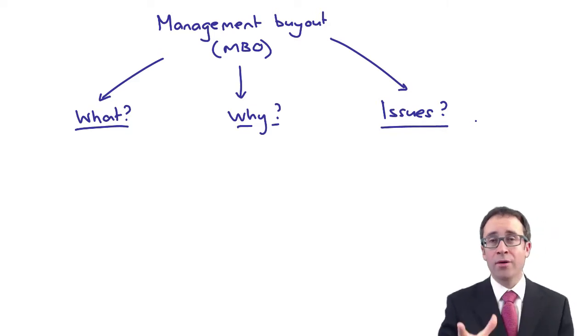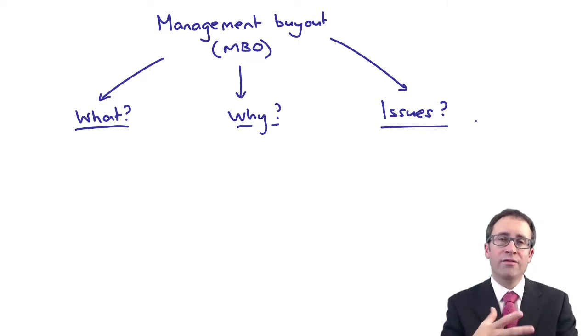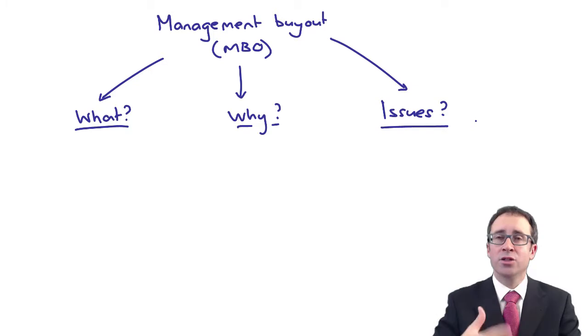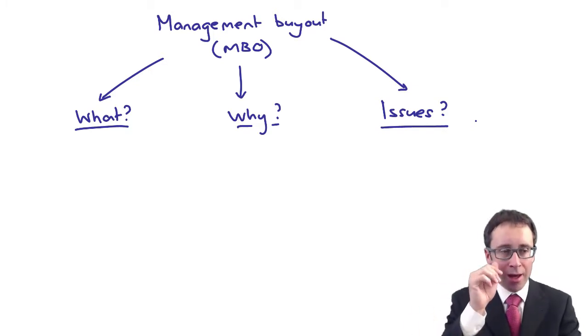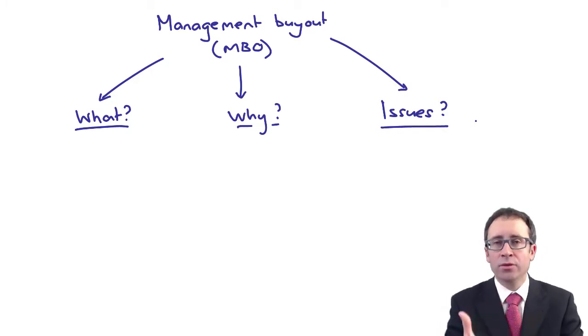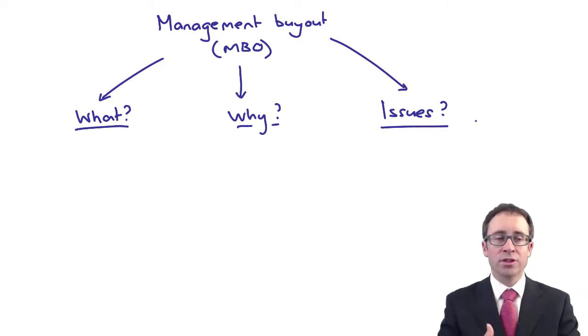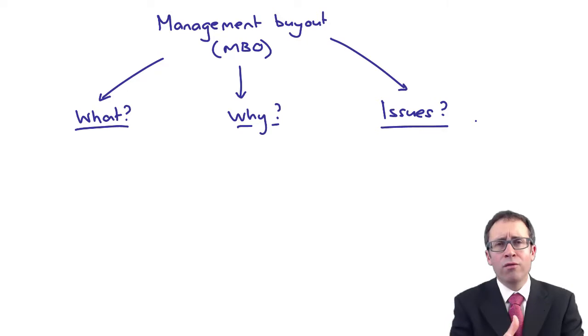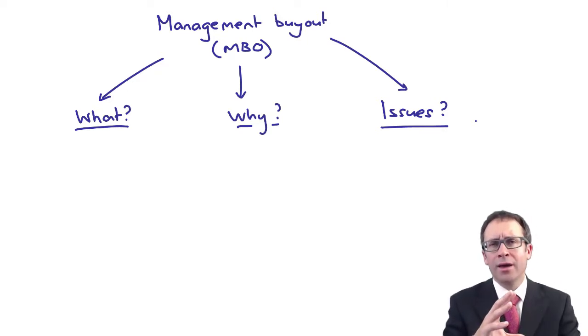If you were to look at it from why the parent company would allow that to happen, it may be that the reason it's making losses is because it was difficult for them to run. It didn't fit in with the core part of the overall group business. Therefore, it is better that it is sold on to the management and allows them to run it by themselves. Likewise, it prevents maybe the redundancies, which would be a very costly impact within the overall set of group accounts.